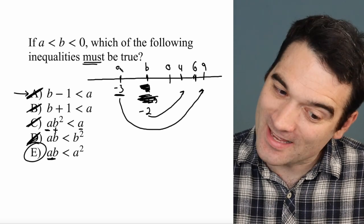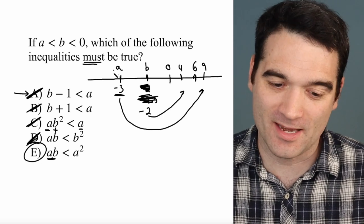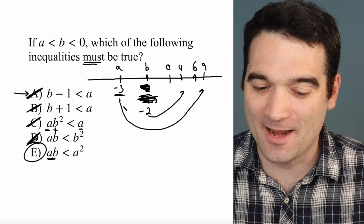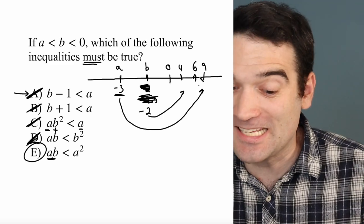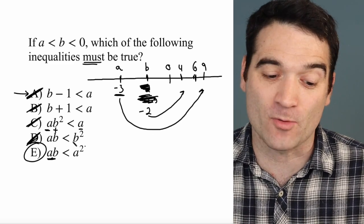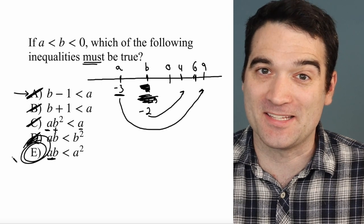So because A is less than B, that is, it's lower in the negative zone, and I'm going to square it, the resulting positive value is always going to be greater. The correct answer here is E.